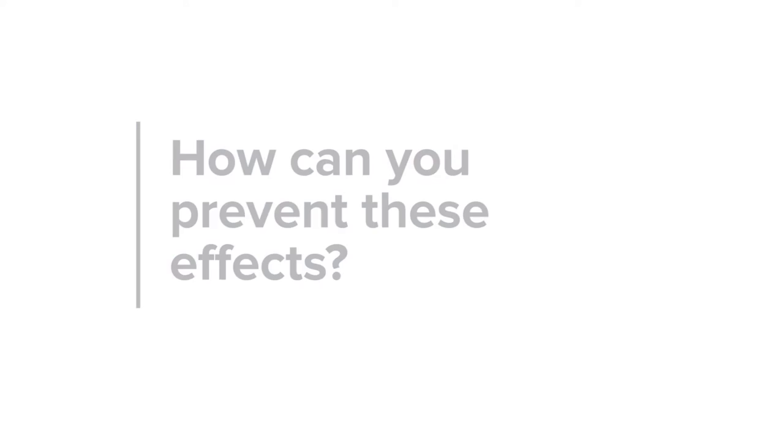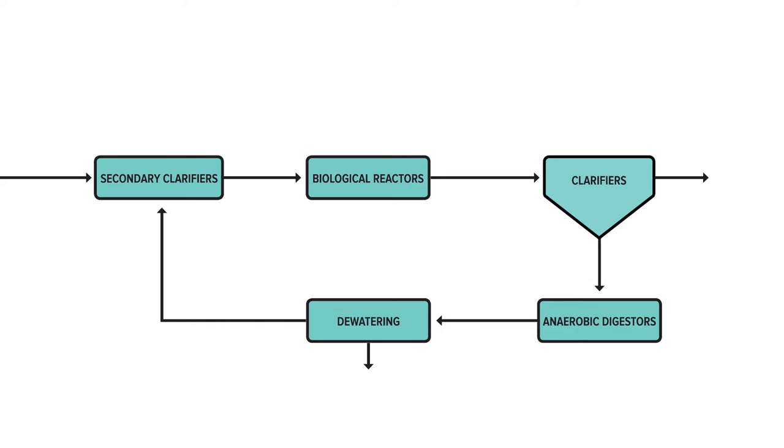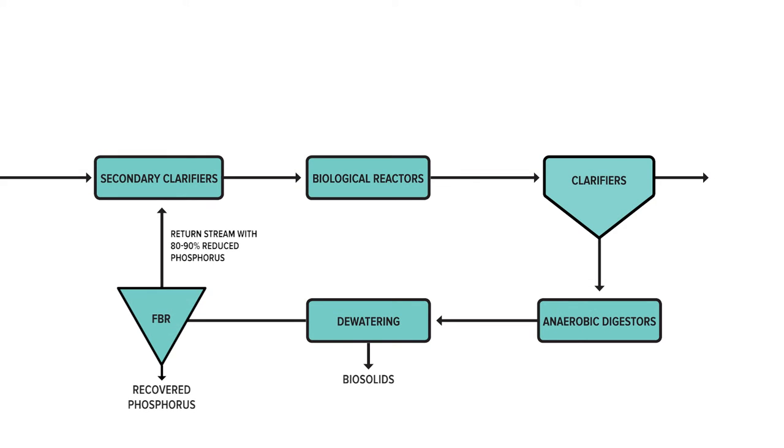One way to stop this racetrack effect is to intercept the side stream — that return stream — and recover the phosphorus. Typically it's going to be in the centrate or the filtrate. Using these technologies, the typical recovery rates can be in the 80 to 90 percent range, so they can really significantly reduce the loading coming back in the return stream.